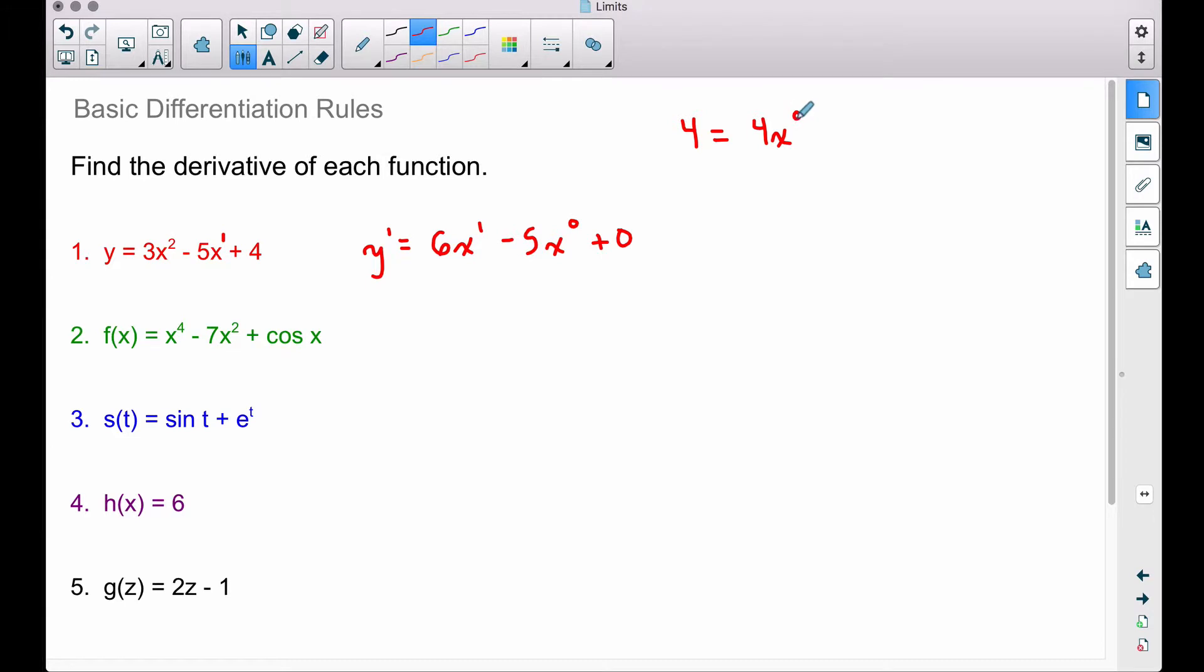Well that gives us 0, so that derivative is going to be 0x to the what power? It doesn't really matter, even if we do subtract 1. Yes, that would give us negative 1, but the point is, when we pull a 0 down here and we multiply by it, this whole thing becomes 0. What I want you to remember is the derivative of a constant is 0.